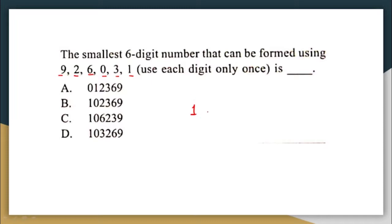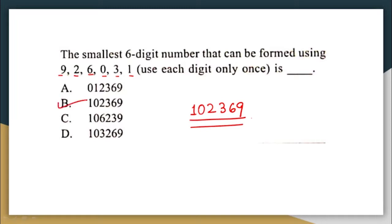After starting with 1, zero comes next, and then we arrange the remaining digits in ascending order: 2, 3, 6, 9. So the smallest six-digit number is 1,02,369. The correct answer is option B.